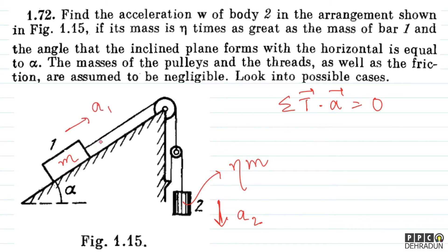If we write tension here as T, then the tension on the other side will be 2T, because this pulley is ideal and massless. If the net force on the pulley is zero, then T plus T equals 2T. So 2T acts on body 1 up the incline, giving us the term 2T dot a1 in the constraint relation.